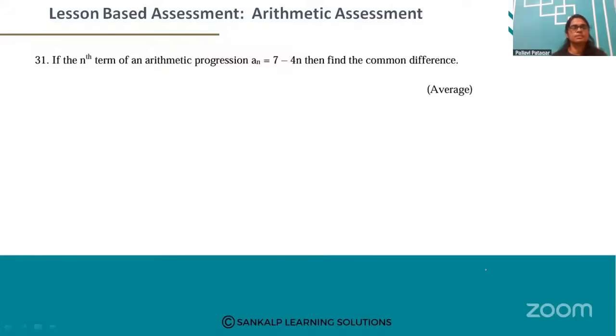Look at question number 31. If the nth term of an AP, an, is equal to 7 minus 4n, then find the common difference. So here to find the first term, the nth term an is equal to 7 minus 4n.